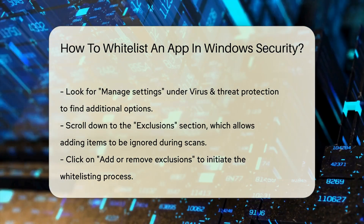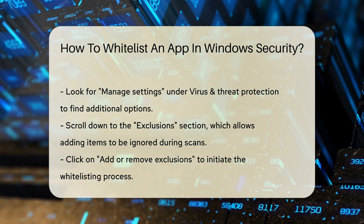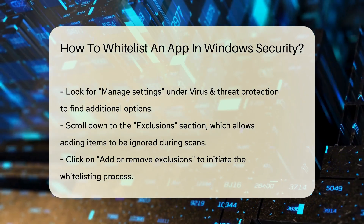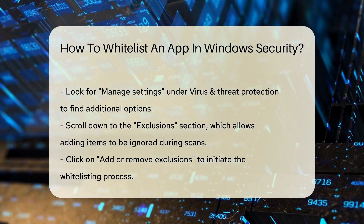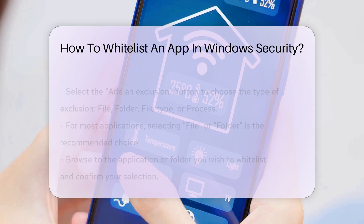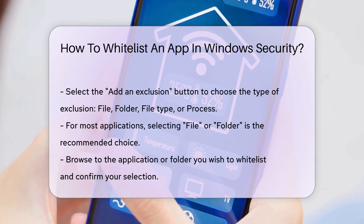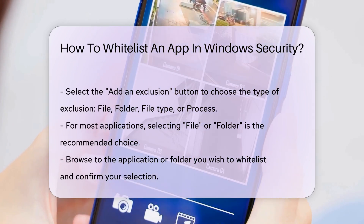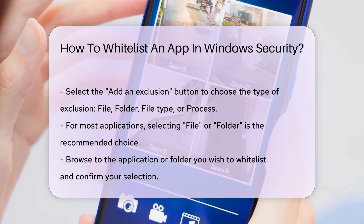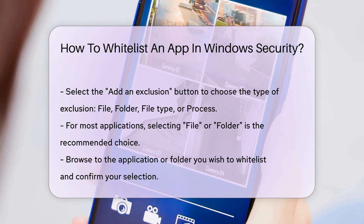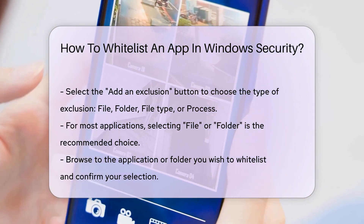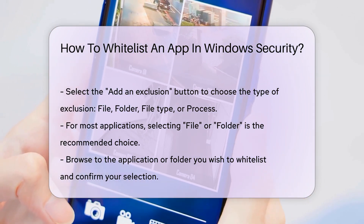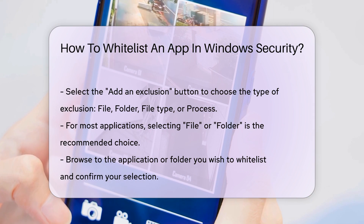Click on Add or Remove Exclusions. You will see a button labeled Add an Exclusion. Clicking this will prompt you to choose the type of exclusion you want to create. You can select File, Folder, File Type, or Process. For most applications, selecting File or Folder is appropriate.